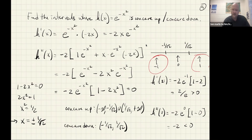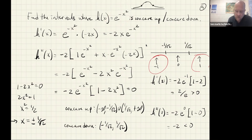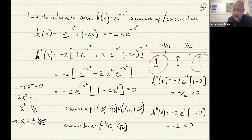This function is related to the normal distribution. Normal distributions have bell-shaped graphs, and these places where the concavity changes are actually the places on the graph where you can identify where the standard deviation is. If you haven't studied statistics yet, it's something you'll encounter — it's actually pretty easy to deal with once you get there.